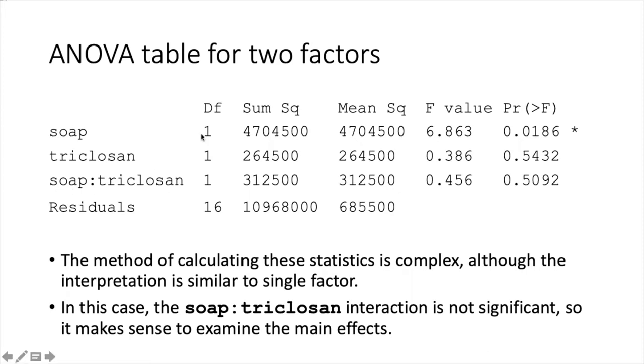The difference is that instead of having a single row for the factor that we are varying, there is a row for each of the main effects and also for the interaction effect. The number of columns and types of columns are the same.